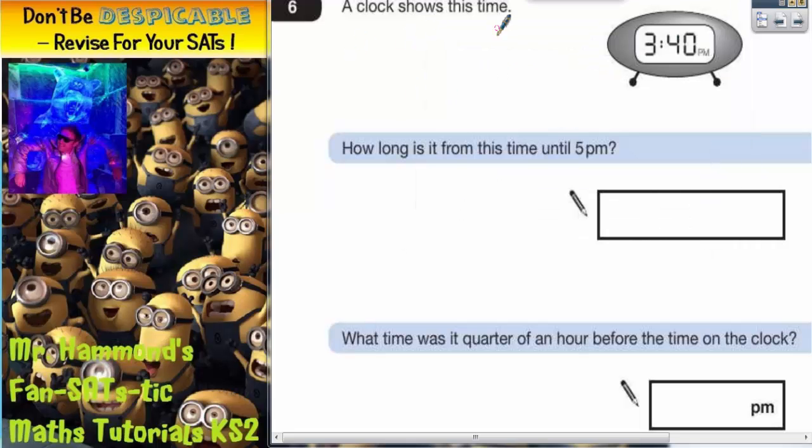Question 6. A clock shows this time, 3:40pm. How long is it from this time until 5pm?